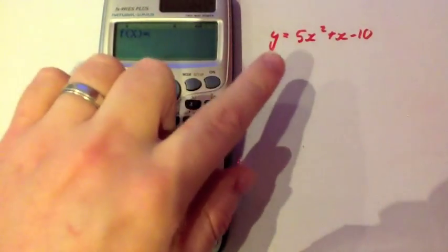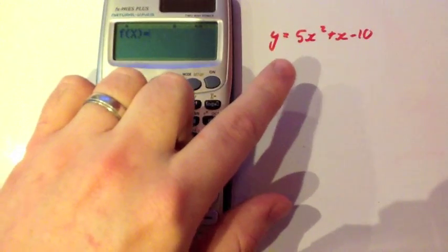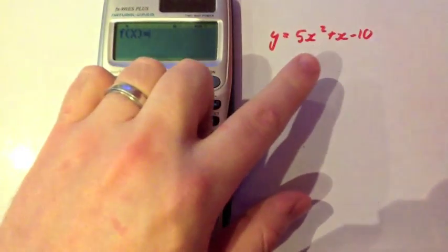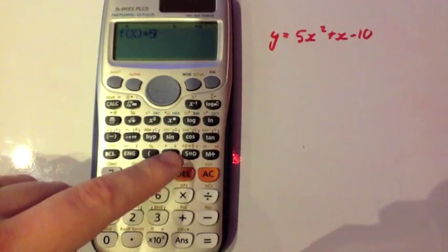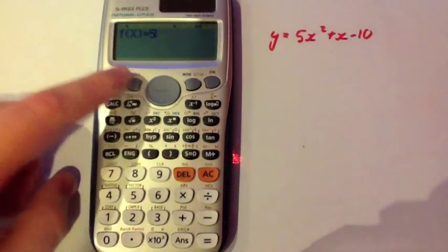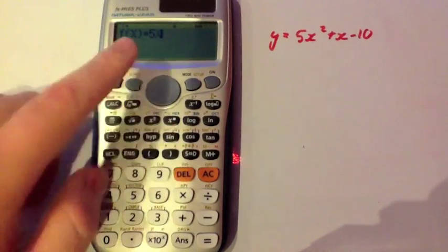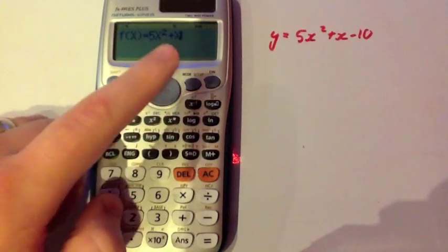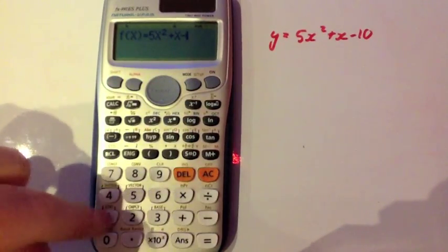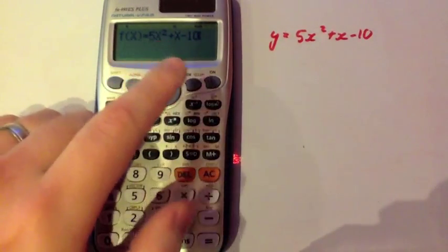Now our function that we want to get our coordinates for or plot the graph for perhaps is 5x squared plus x minus 10. So I'm going to press 5 and now the x is the red button above close brackets. So I'm going to press alpha and then close brackets x squared plus then alpha close brackets for the x minus 10. And you can see I've typed in my function.